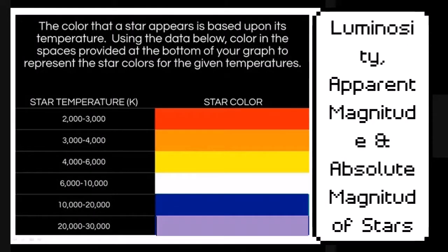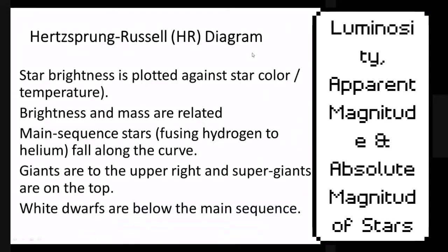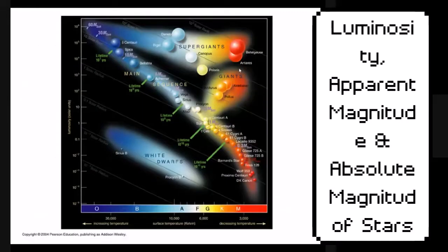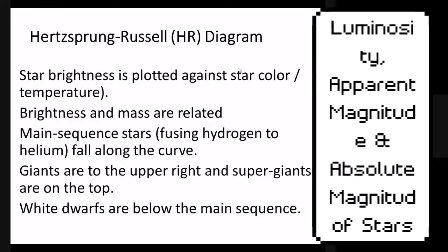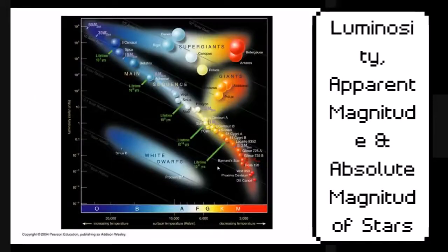Let's go over temperature. Color depends on temperature. We're going to do a quick intro on HR diagrams. For an HR diagram, the y-axis is star brightness or luminosity — that's why we talked about luminosity today. It's plotted against star color and temperature. The temperature of the star is on the x-axis, starting with the coldest temperatures on the right — the red dwarfs, around 3,000 Kelvin — and heating up to about 30,000-plus Kelvin on the left side.